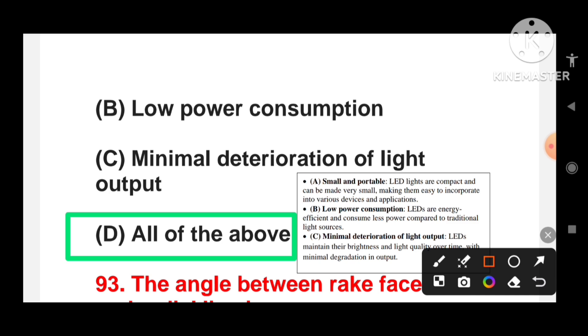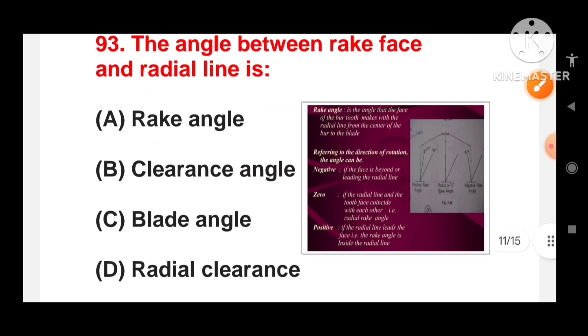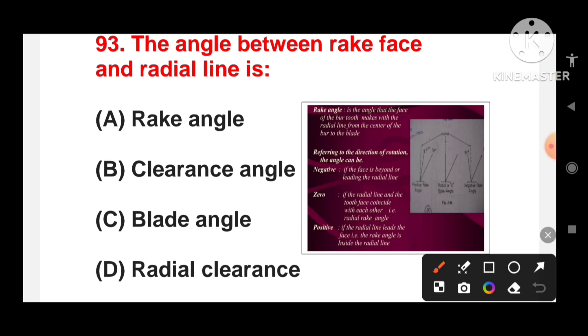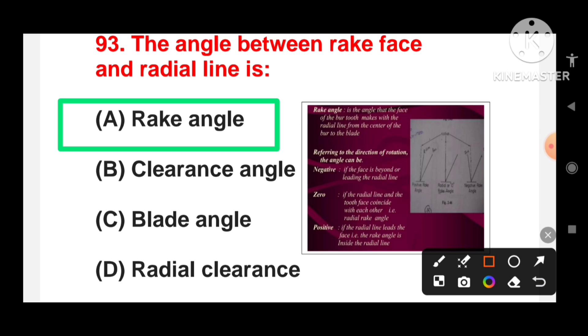The angle between rake face and radial line is: rake angle, clearance angle, blade angle or radial clearance? The angle between the rake face and radial line is known as rake angle. Rake angle is a critical parameter in machining and cutting tools and it affects the cutting performance and quality of the finished surface.